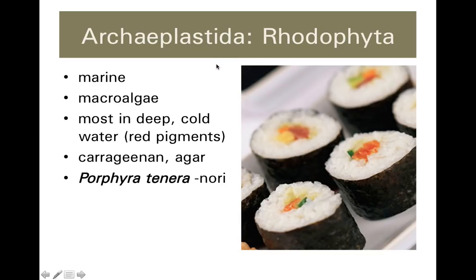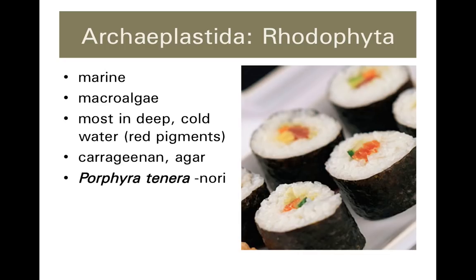The Rhodophyta — you've almost certainly eaten members of the Rhodophyta. Even if you're not a big fan of sushi, this seaweed wrap called nori comes from a red alga called Porphyra tenera; you can see it's very dark in color. This is a marine phylum, most of these algae are macroscopic — colonial or multicellular — and they tend to be found in deep, cold waters. The depth of the water explains why we observe reddish pigments in the Rhodophyta.